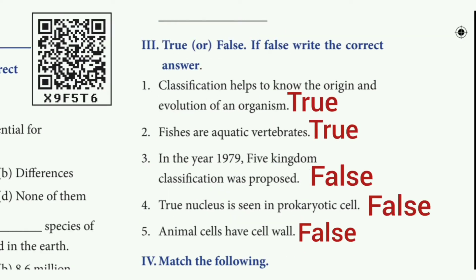True or False — if false, write the correct answer. First: classification helps to know the origin and evolution of an organism. The answer is true. Second: fishes are cold-blooded vertebrates. The answer is true. Third: in the year 1979, five-kingdom classification was proposed. The answer is false.